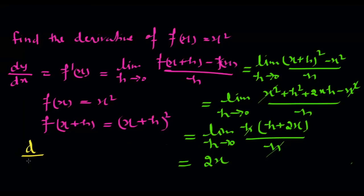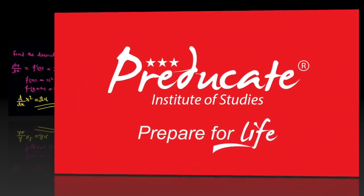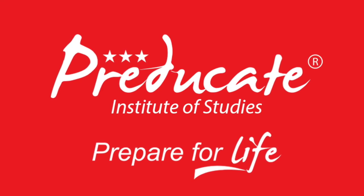Putting h equal to 0, the answer is 2x. Finally, the derivative of x squared is equal to 2x. Thank you for watching.